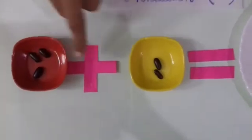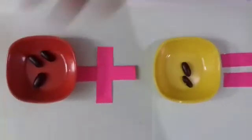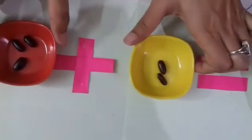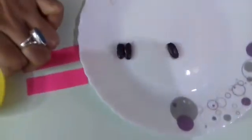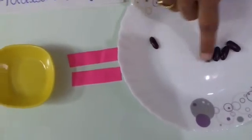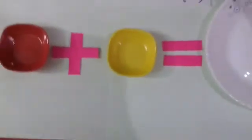I told you the plus sign means to mix two things together. So let us mix these two things together. And now count it. One, two, three, four, five. So three plus two is five.